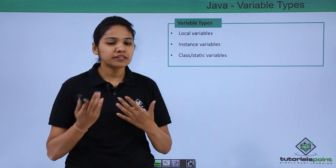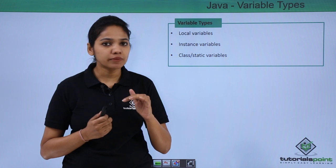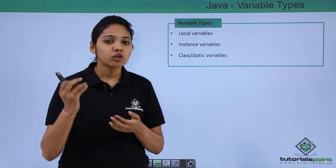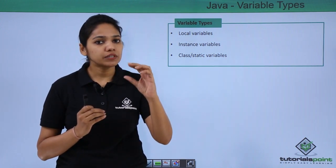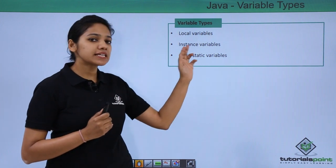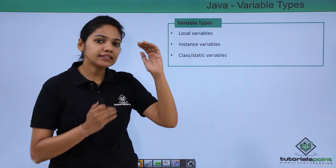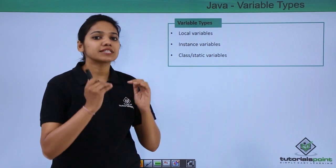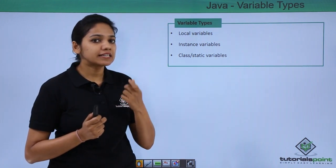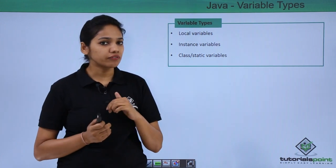Local variables are those that you define under each method. In our previous examples, we have created variables under the main method. Those variables are local to that particular method and are accessible within them. The next one is instance variables. Instance variables are declared inside the class but outside the method - so variables declared inside the class but outside the main method or any other method that you define.